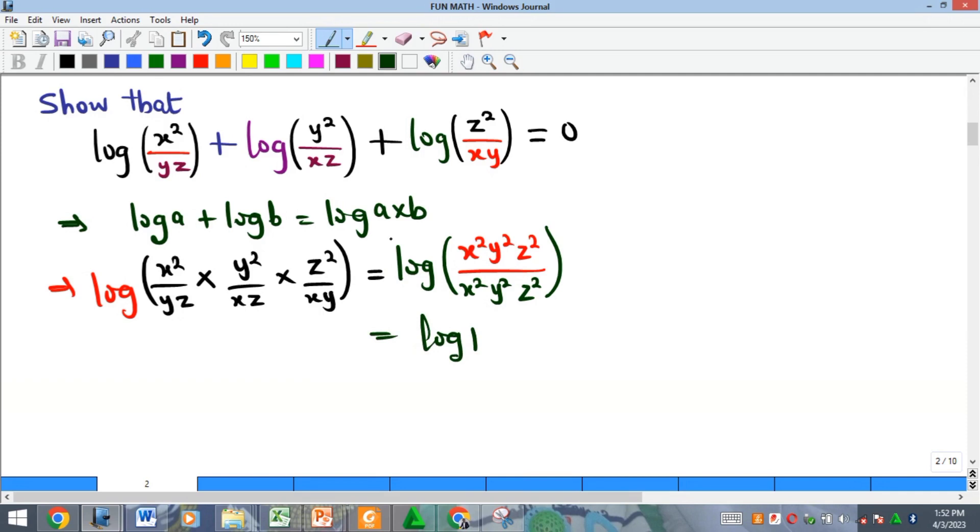By the time you divide what you have, you get one. And there's a rule that tells us that the log of one to any base is equal to zero. So we'll be able to get what is on the right hand side, and that is enough to prove that both sides are equal. That means what we have on the left hand side is equal to zero.